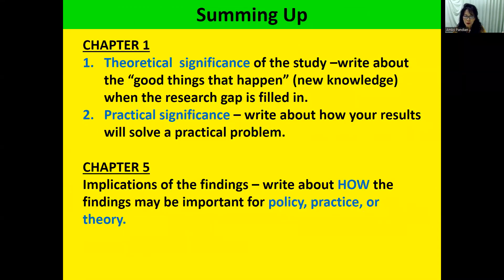To sum up: in chapter one, you have two types of significance. Theoretical significance is where you talk about the new knowledge gained when the research gap is filled in. Practical significance is where you write about how your results will solve a practical problem. When it comes to chapter five, you close it off by telling them again — years earlier I told you this significance; now I truly have evidence for it because I got my results. This is how my findings are useful for government policy, for how people do things, and also for theory to increase knowledge.